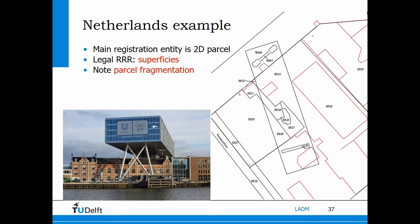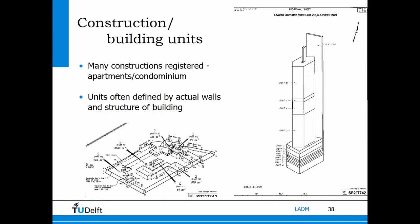An example from the Netherlands: here we have a building built on top of other buildings. If we look at the 2D map, the result is a fragmentation of parcels. The base parcels have an indication that there is a superficies, which allows the owner of the building above to build and use that space. The result is fragmentation — for one object there are now many parts.